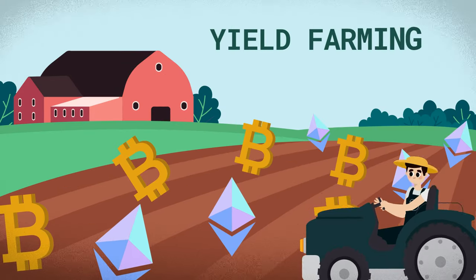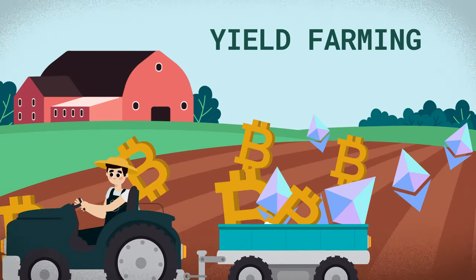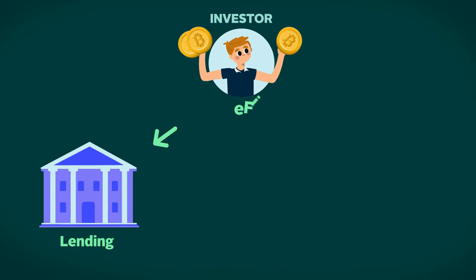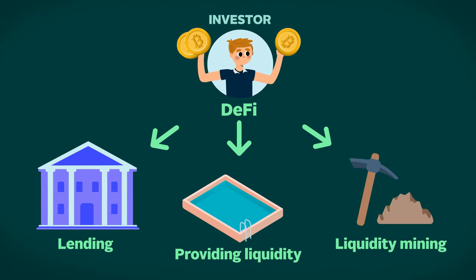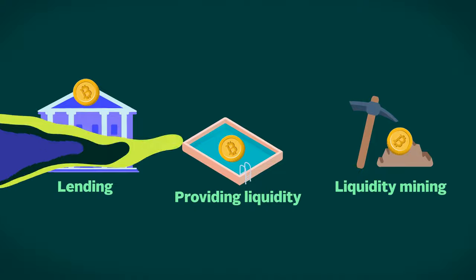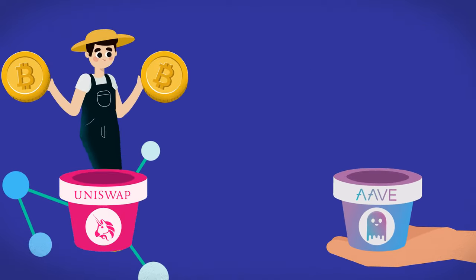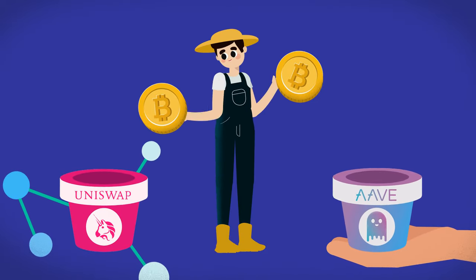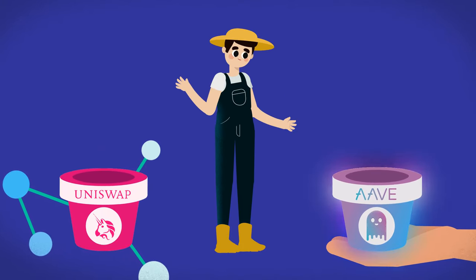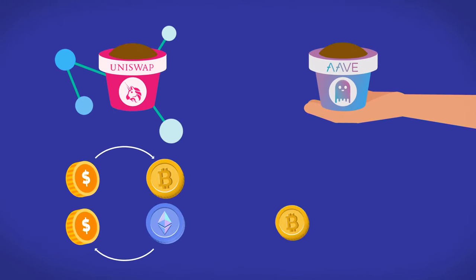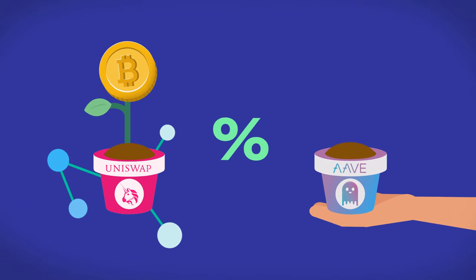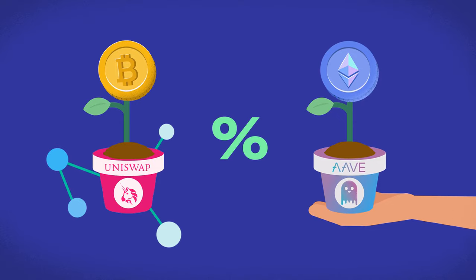Yield farming is pretty self-explanatory. It basically describes the act of investors trying to maximize their returns, or yield, in DeFi by putting their assets to work on different protocols. For example, yield farmers can deposit assets into DEXs like Uniswap or lending platforms like Aave to help facilitate trades and loans. And in return, they are rewarded with a portion of the platform's fee or interest paid by borrowers.